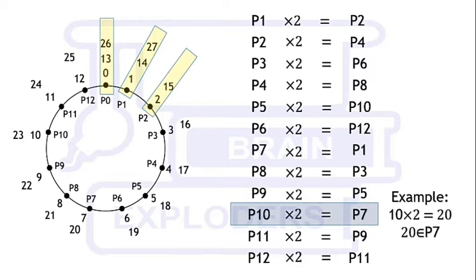For example, 10 times 2 is 20. 10 belongs to P10 and 20 belongs to P7.